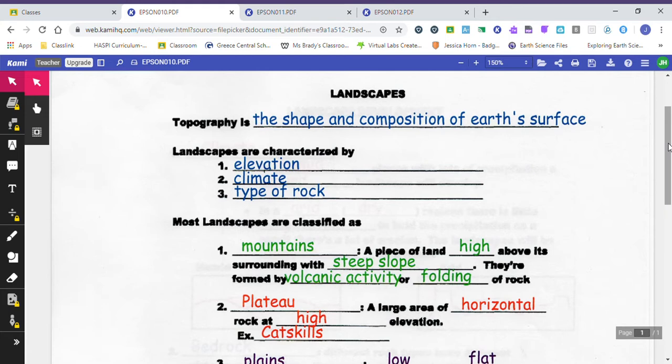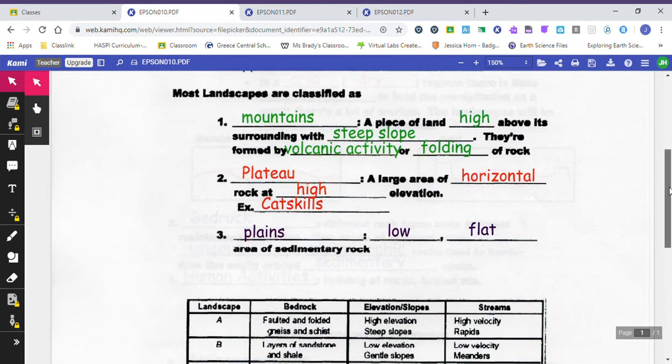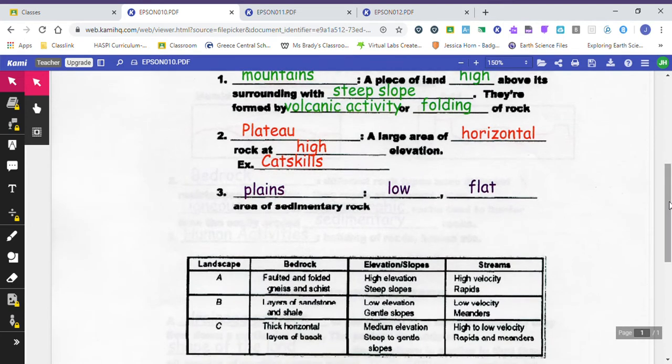We've got mountains, plateaus, and plains. Plains are going to be very low, very flat, mostly made up of sedimentary rock because they've been weathered and eroded away over time. We have a chart here that describes different landscapes. We need to look at the bedrock, look at the elevation, and then look at what kind of streams it has and try to figure out which of the three landscape features is it: a mountain, a plateau, or a plain.